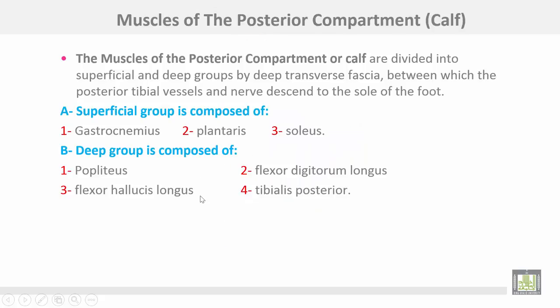The muscles of the posterior compartment, or calf muscles, are divided into superficial and deep groups by the deep transverse fascia, between which the posterior tibial vessels and nerve descend to the sole of the foot. The superficial group is composed of gastrocnemius, plantaris, and soleus.